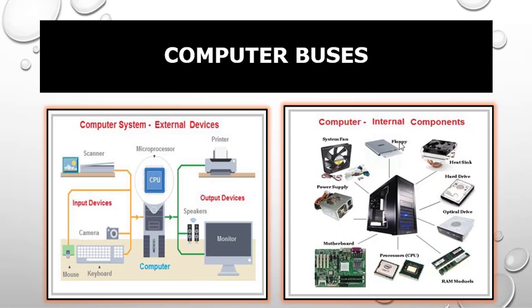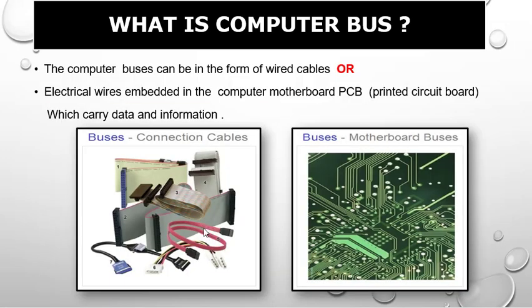There is a graphical representation of the external devices and internal devices, and there also exist buses which are connecting to these devices internally as well as externally. A computer bus can be in the form of a wire or cable. There is also another type of computer bus which is the printed circuit board — electrical wires embedded in the computer motherboard. In this picture it is visible that different wires are printed on the circuit board. These lines are used to transfer data from one location to another or to connect different components in the system to each other.